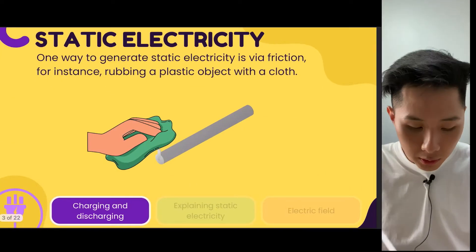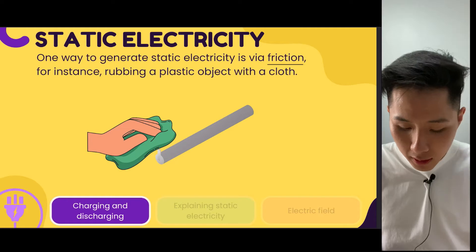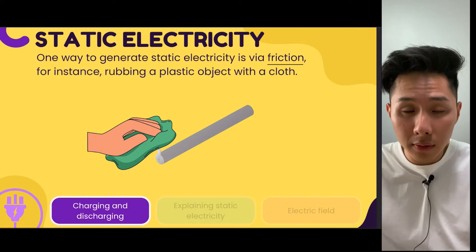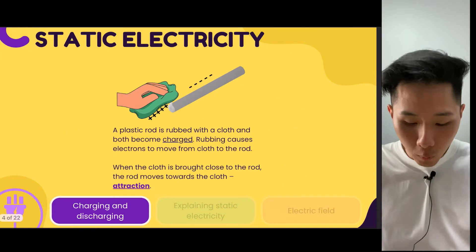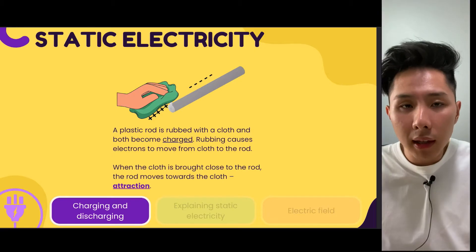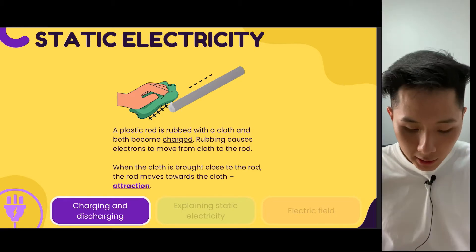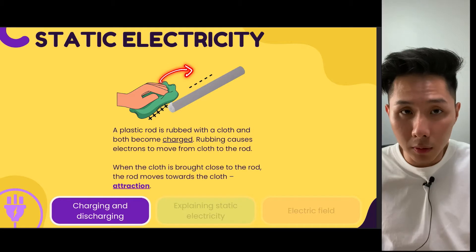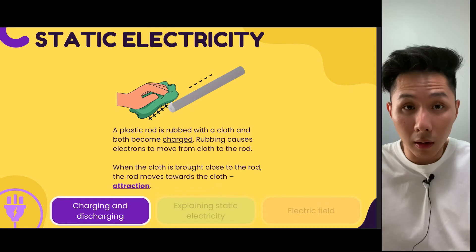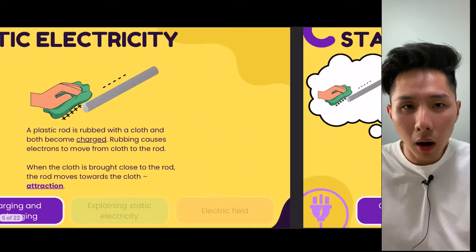One way to do this is via friction. What happens when, for instance, you rub a plastic object with a cloth? When this action is performed, the electrons are going to flow from the cloth to the plastic rod. And when the cloth is then brought close to the rod, the rod will move towards the cloth. And this is called attraction.